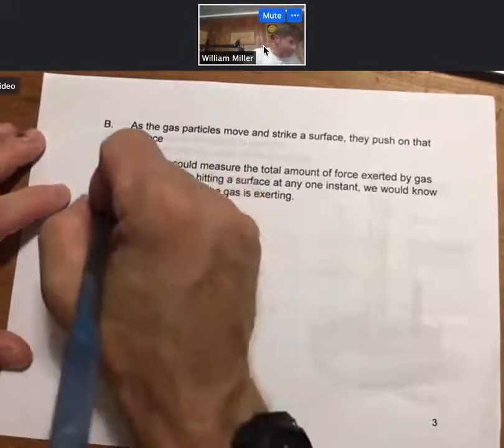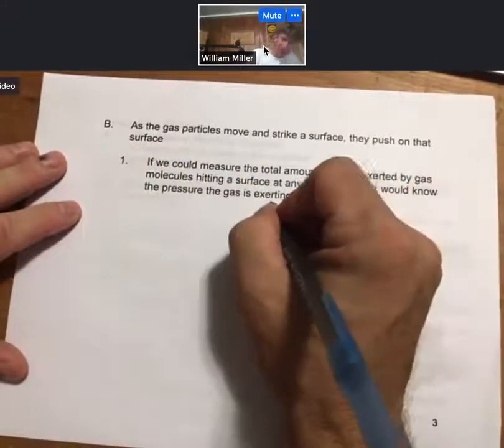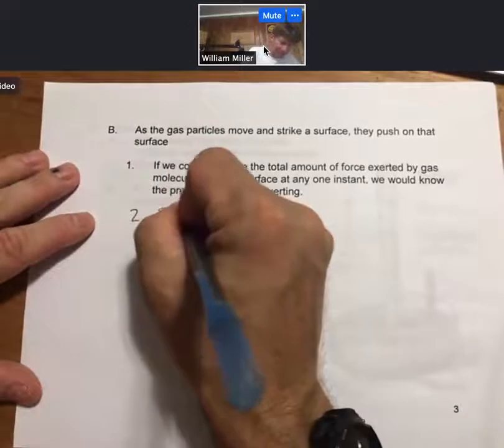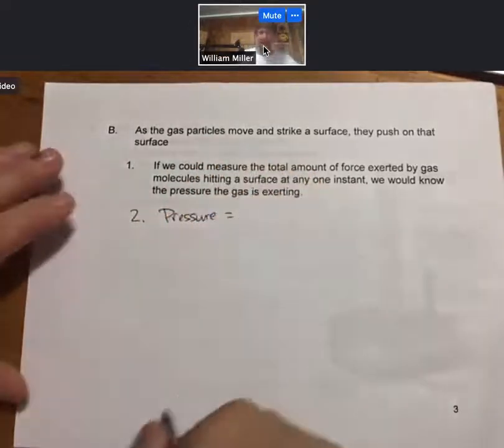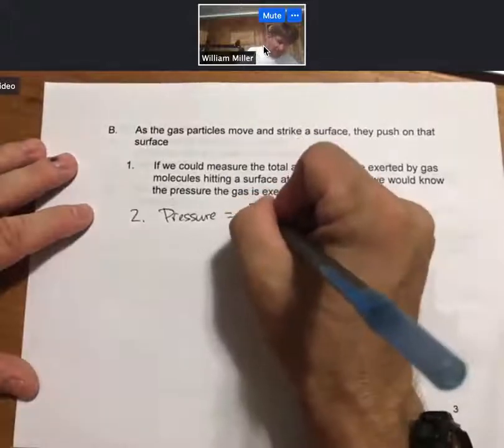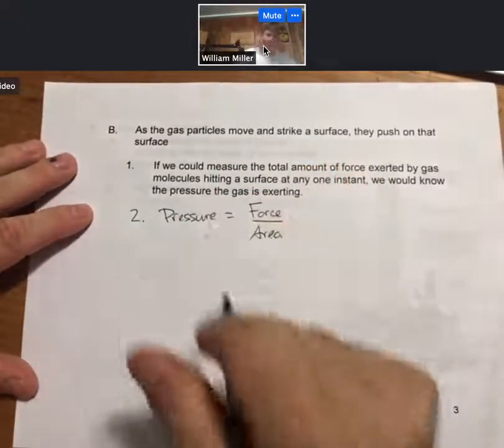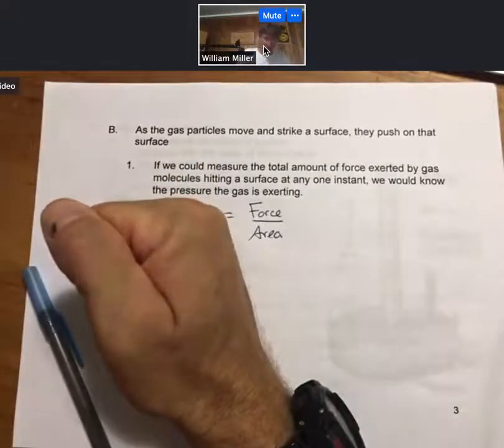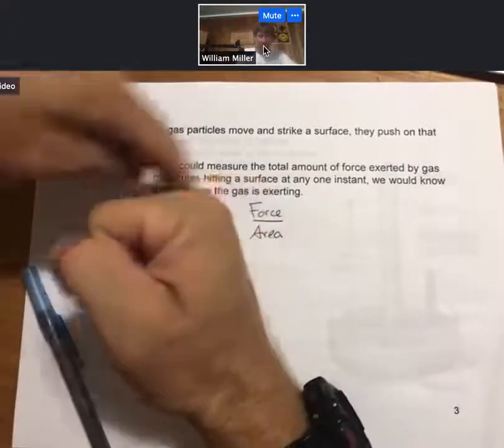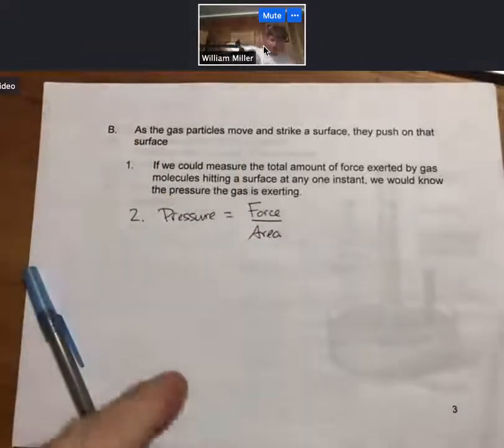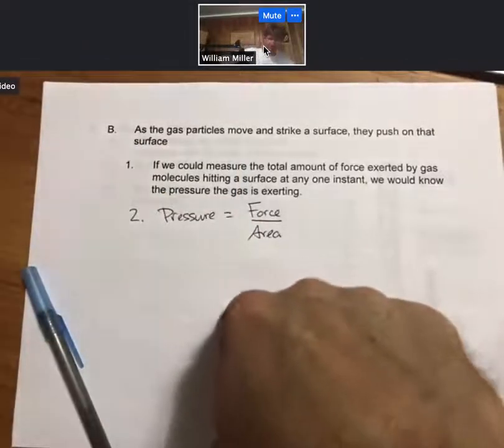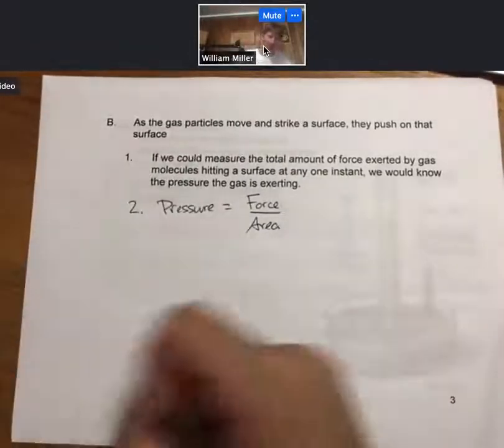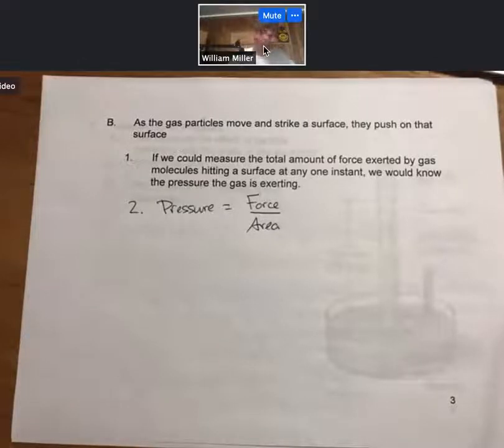Pressure is a force per area. When I was striking my desktop, I had a certain amount of force and it was in a certain amount of area. If I were to do the same thing except with the tip of my finger, there would be much more pressure. If I had the same force coming down on a smaller area, I would have much more pressure on that surface.